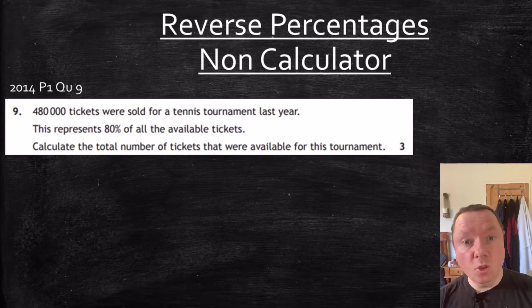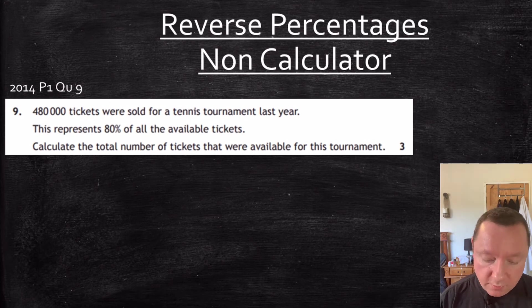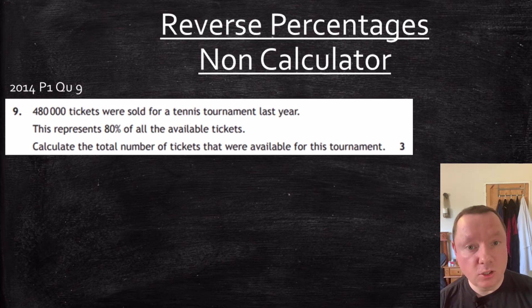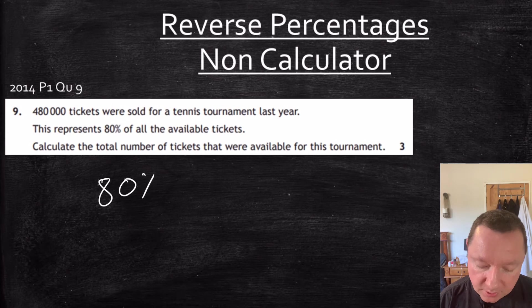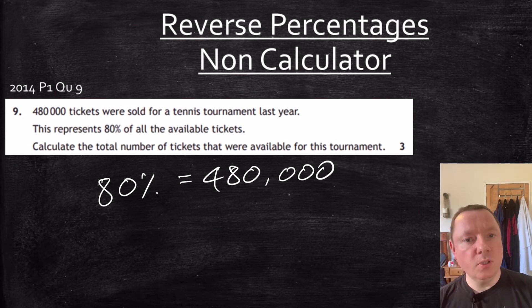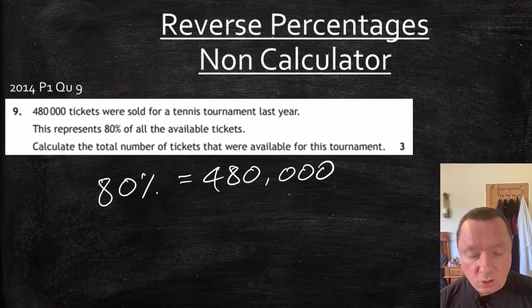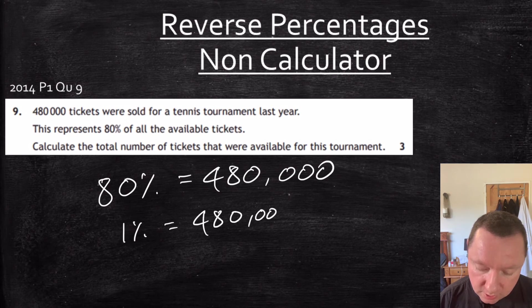Okay, same type of question here, but this time non-calculator. I can't use a calculator at all. So it's 2014, paper 1, question 9. 480,000 tickets were sold for a tennis tournament last year. This represents 80% of all available tickets. Calculate the total number of tickets that were available for this tournament. I know that 80% represents 480,000. And I want to know what's 100% going to be. So I need to get down to 1% maybe, or 10%, and then back up to 100%. In this case, I can see that 80 does go into 480,000. So I'll find 1% by dividing by 80. 480,000 divided by 80.